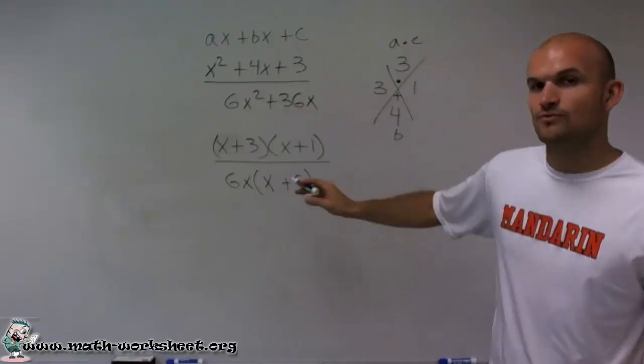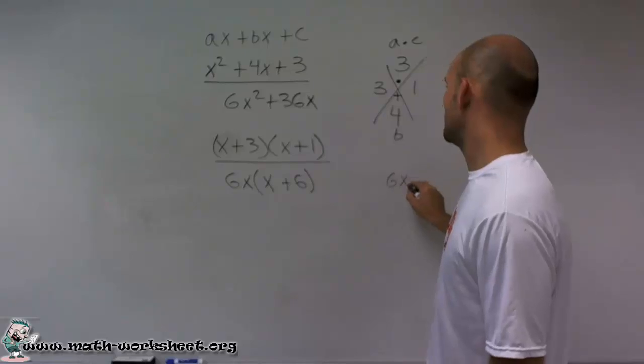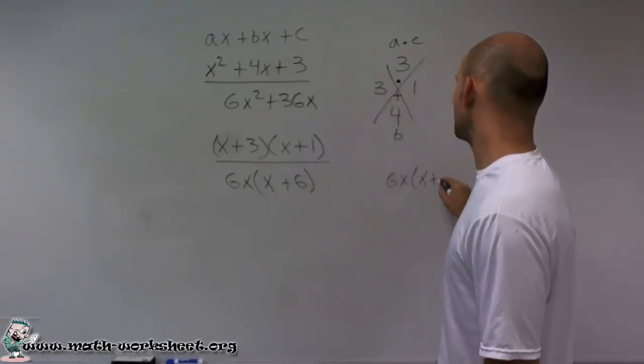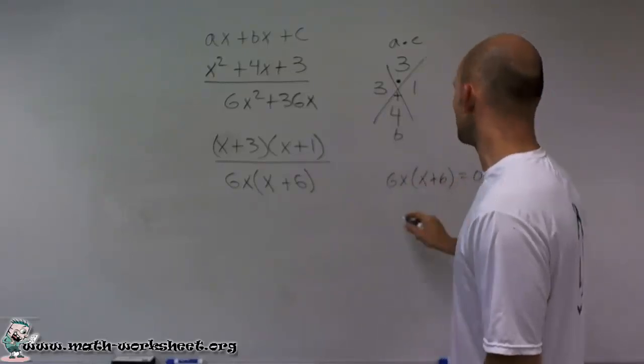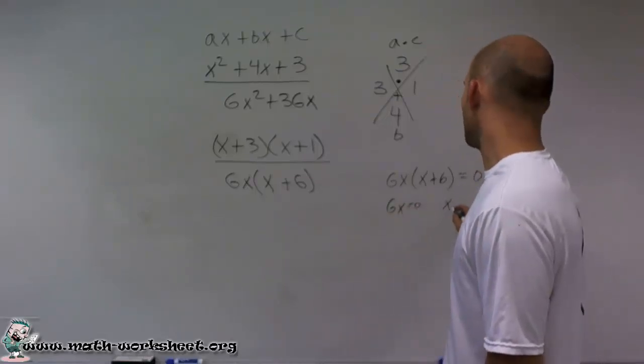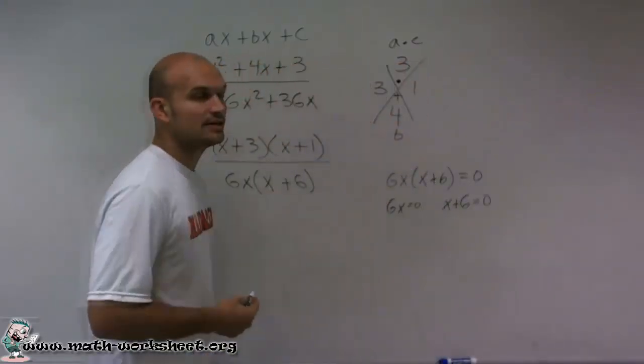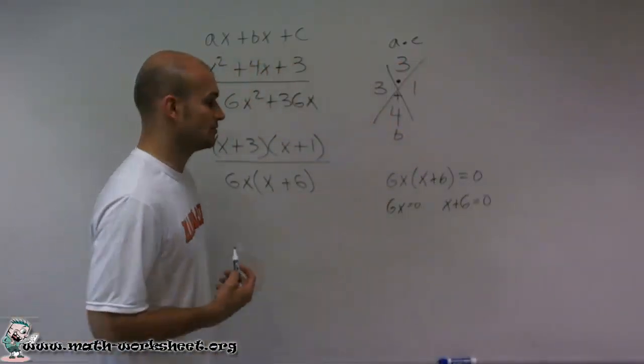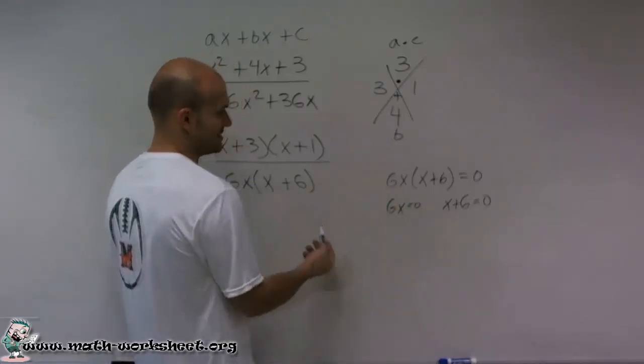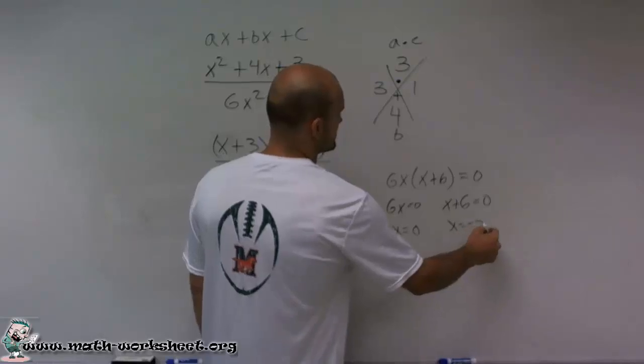So I just take a look at this. So what I could say is if 6x times x plus 6, if that equals 0, that means either 6x equals 0 or x plus 6 equals 0. So therefore, what are the two possible numbers to make x equal or would be 0? Well, either x could equal 0 or x equals negative 6.